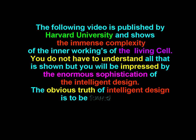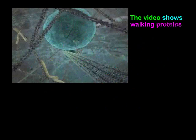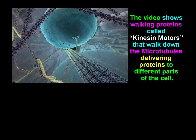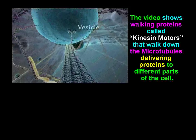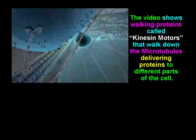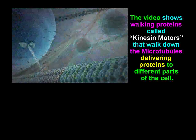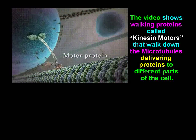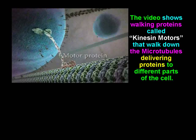The obvious truth of intelligent design is to be found within the cell. The video shows walking proteins called kinesin motors that walk down the microtubules, delivering proteins to different parts of the cell. Microtubules provide tracks along which membrane-bound vesicles travel to and from the plasma membrane. The directional movement of these cargo vesicles is due to a family of motor proteins linking vesicles and microtubules.